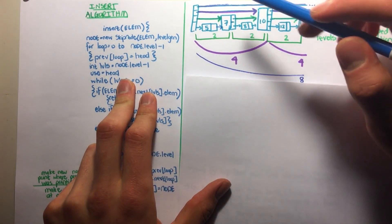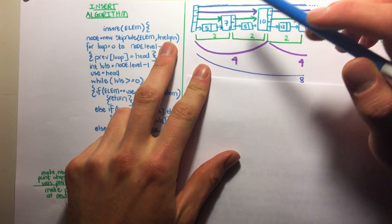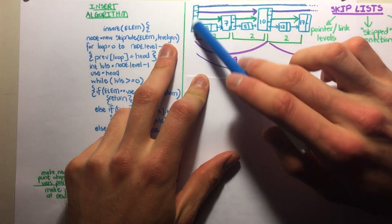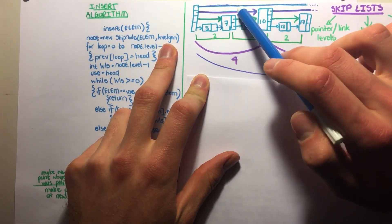So now we say, okay, we need to generate a random level. Let's say we generated level 3, the second one from the top.